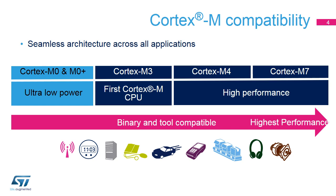The Cortex M3 was the first Cortex M CPU released by ARM. Then ARM decided to distinguish two product lines, high performance and low power, while maintaining the compatibility between them. The Cortex M4 belongs to the high performance product line.